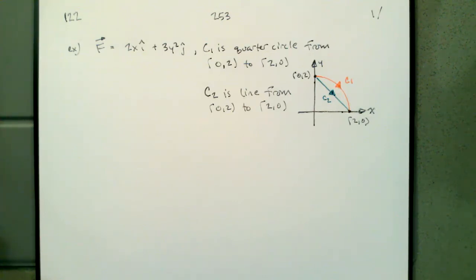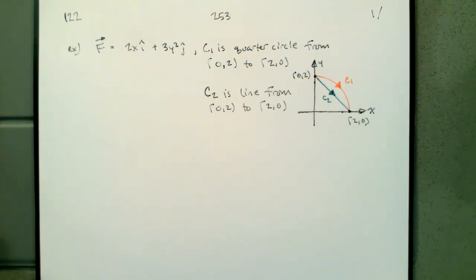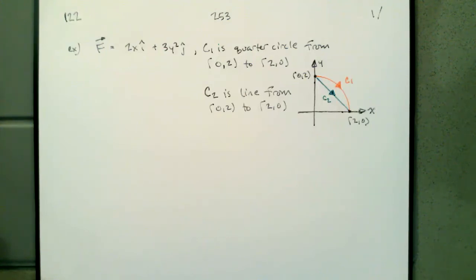Today we want to start off with a couple of line integrals. We're going to take this vector field 2xi plus 3y squared j, and then we have these two different paths. We're going to do two different line integrals — one along c1, which is the quarter circle from (0,2) to (2,0), and c2, which is just the line from (0,2) to (2,0). Most of the work, as usual, is going to be wrapped up in parameterizing our curves.